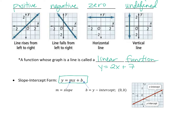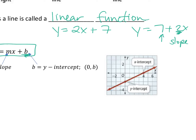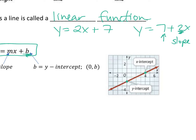Here's your slope-intercept form: y equals mx plus b. Remember, whatever comes in front of your x — your coefficient to x — is always your slope. So it could look like y equals 7 plus 2x; this is still your slope even in a different spot. That b value, that constant standalone value, is your y-intercept. The y-intercept is where the line hits the y axis, and the x-intercept is where it hits the x axis. Make sure you're clear on those.